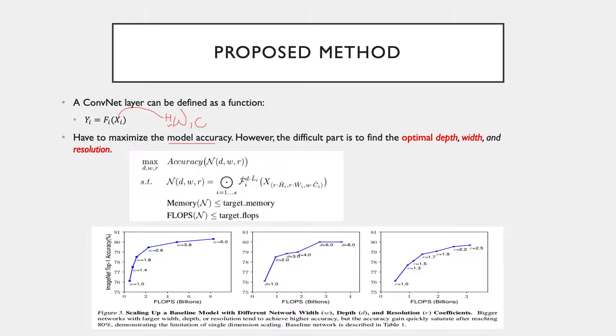Next, for width. Wider networks tend to be able to capture more fine-grained features and are easier to train. The drawback is extremely wide but shallow networks tend to have difficulties in capturing higher-level features.